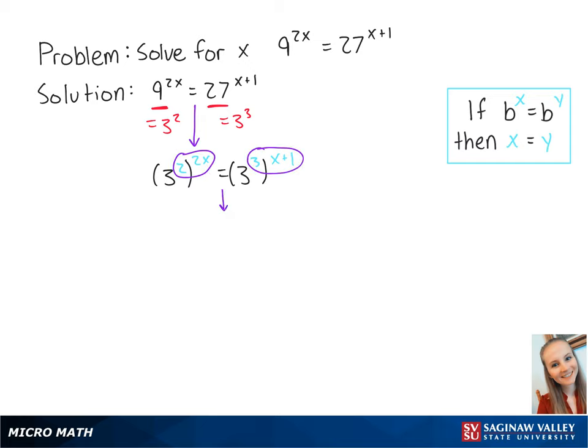If we multiply the exponents together, we get 3 to the 4x equals 3 to the 3x plus 3. Since 4x and 3x plus 3 share the same base of 3...